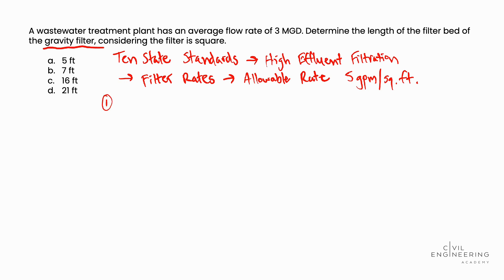So in step 1, we're going to convert the flow rate of 3 million gallons per day, given in the problem statement, to gallons per minute. So we'll take 3 million gallons per day, times our conversion factor of 1 day over 24 hours, times another conversion factor of 1 hour over 60 minutes. And performing the math, we determine the flow rate to be 2,083 gallons per minute.